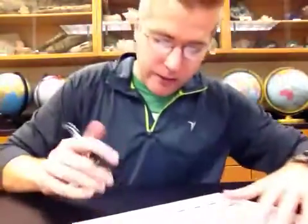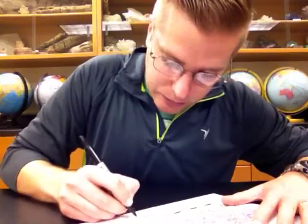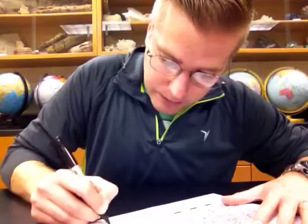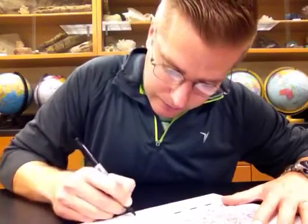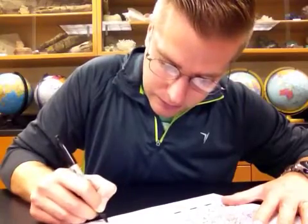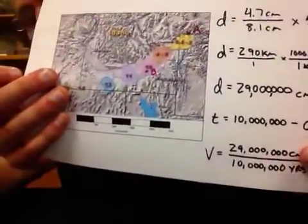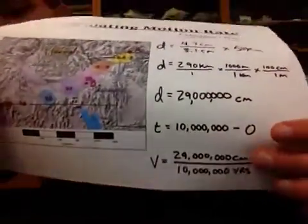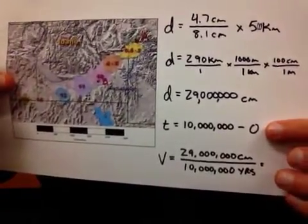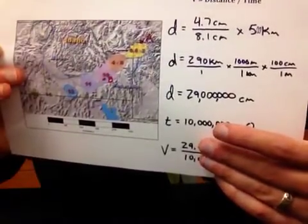We now have the 2 pieces we need to figure out the rate. We have the distance is 29 million centimeters divided by our time, which is 10 million years. So we write out that for the velocity equation: 29 million centimeters divided by 10 million years. You can either use a calculator, or because all these zeros just cancel each other, 29 divided by 10.